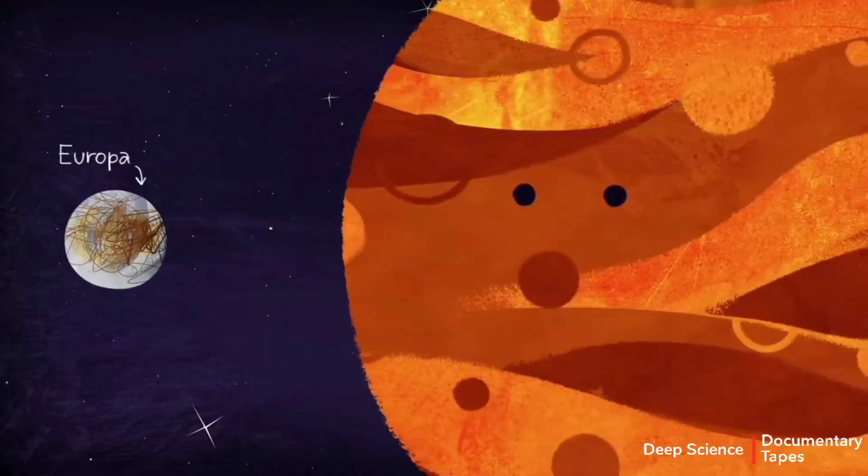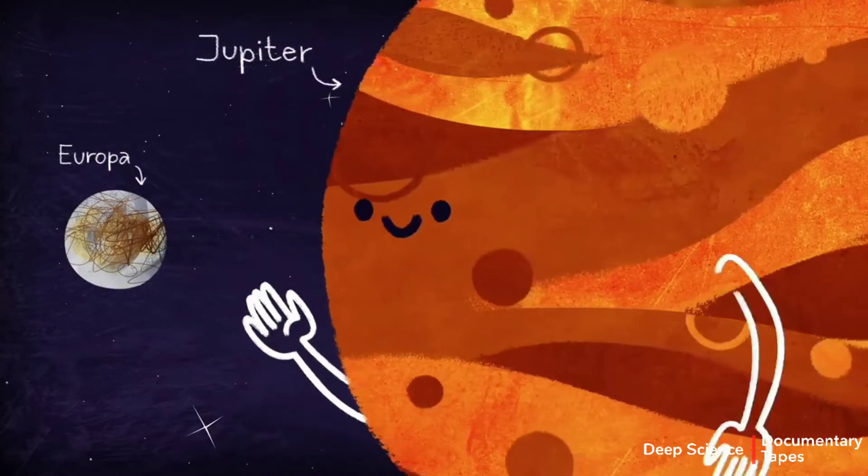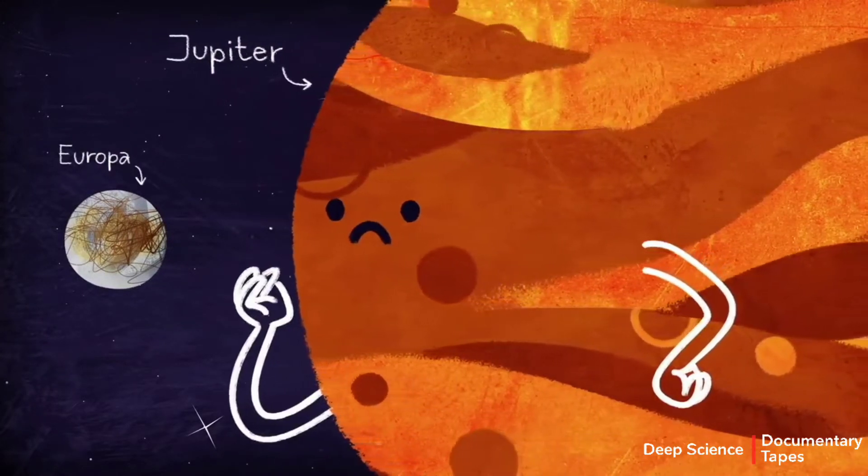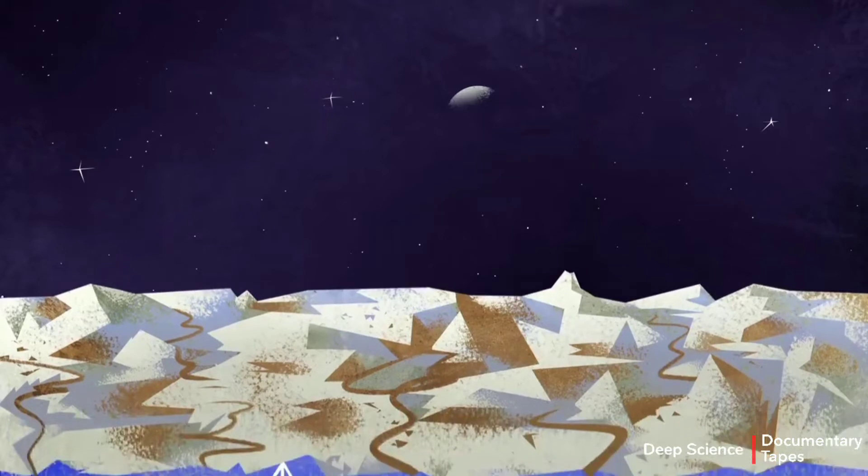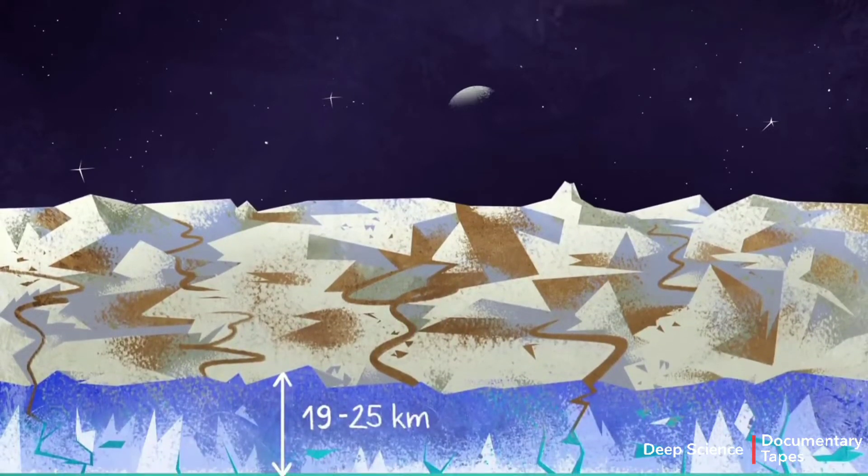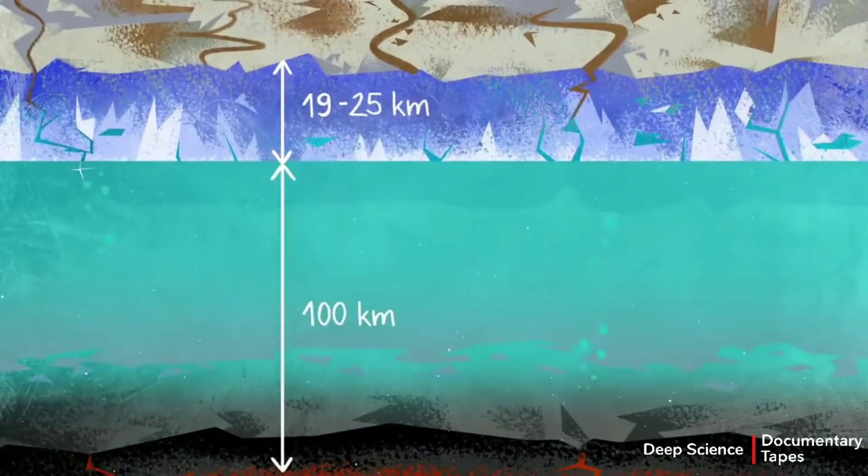Europa, which is a moon of Jupiter, is probably the most intriguing ocean world. Beneath a surface layer of ice thicker than Mount Everest, there exists a liquid ocean as much as 100 kilometers deep.